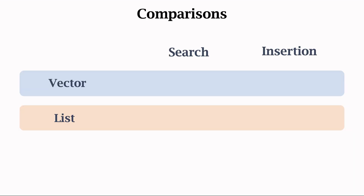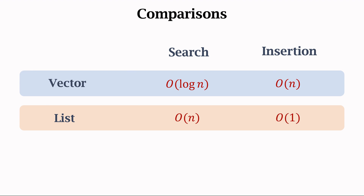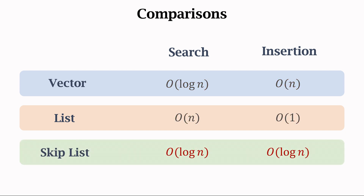Here I compare vector and list. Vector supports efficient search — binary search has only O(log n) time complexity. However, it is slow to perform insertion, which costs O(n) time. Linked list does not support binary search because it does not support random access, so exhaustive search has O(n) time complexity — it is slow. The strength of list is fast insertion, which has only constant time complexity. In the next lecture, we will study skip list, which supports both efficient search and efficient insertion. Both operations have O(log n) time complexity.